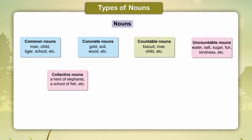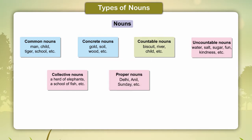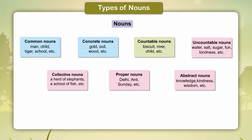Collective nouns: A herd of elephants, a school of fish, etc. Proper nouns: Delhi, Anil, Sunday, etc. Abstract nouns: Knowledge, Kindness, Wisdom, etc.